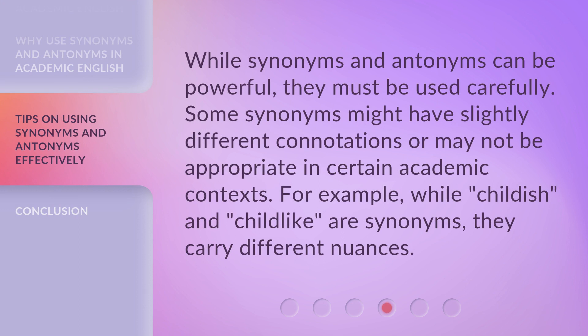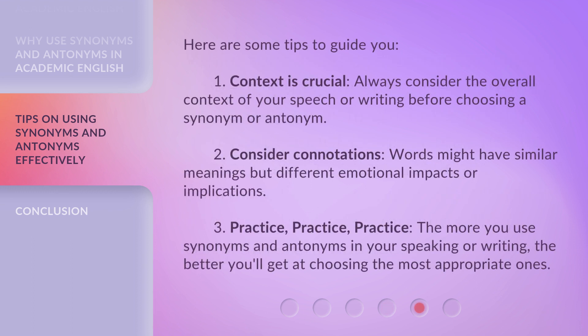While synonyms and antonyms can be powerful, they must be used carefully. Some synonyms might have slightly different connotations or may not be appropriate in certain academic contexts. For example, while 'childish' and 'childlike' are synonyms, they carry different nuances. Here are some tips to guide you. First, context is crucial — always consider the overall context of your speech or writing before choosing a synonym or antonym. Second, consider connotations — words might have similar meanings but different emotional impacts or implications. Third, practice, practice, practice. The more you use synonyms and antonyms in your speaking or writing, the better you'll get at choosing the most appropriate ones.